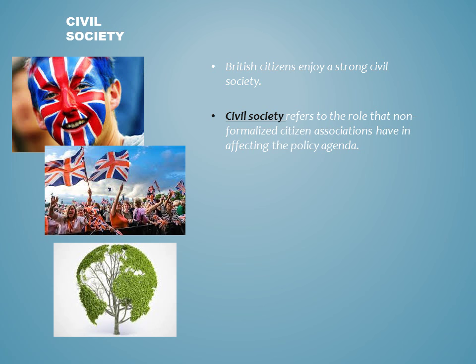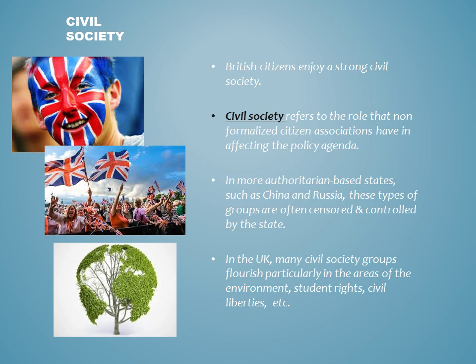Consistent with its strong democratic roots, British citizens enjoy a strong civil society. In political science, we refer to the term civil society when talking about the role that non-formal groups, unlike interest groups, play in affecting the policy agenda. These are groups of common citizens who have the opportunity to come together at will and have their voice heard in the political system. In more authoritarian type countries like China and Russia, civil society is typically heavily controlled and censored by the state. But in the UK, many civil society groups have emerged and flourish, as their voice typically plays a large role in the policies that are proposed. In recent years, we've seen environmental groups have a large influence, as well as student rights groups and civil liberty groups, while the influence of trade unions has steadily gone down.